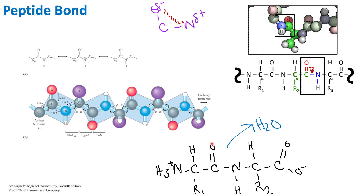To summarize: the trans configuration means water is released, making it a condensation reaction. The electrons are delocalized between the oxygen and the nitrogen, giving the peptide bond a partial double bond character. These partial positive and partial negative charges will be important later when we discuss secondary structures of proteins — and that is essentially peptide bonds.